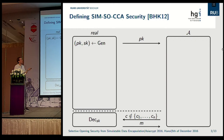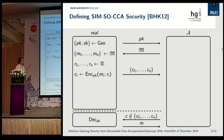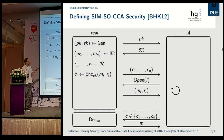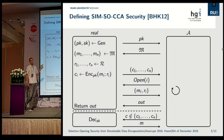We allow the adversary to control the message distribution. The adversary picks the message distribution, sends it to the real game, and the real game samples n messages accordingly. The real game then encrypts the messages and sends them back to the adversary. We model the corruption phase — for historical reasons called the opening phase — where the adversary can make an open request and the game reveals message m_i and randomness r_i. The adversary can do this multiple times, and eventually outputs something we call 'out', representing information the adversary tried to derive on non-opened ciphertexts.